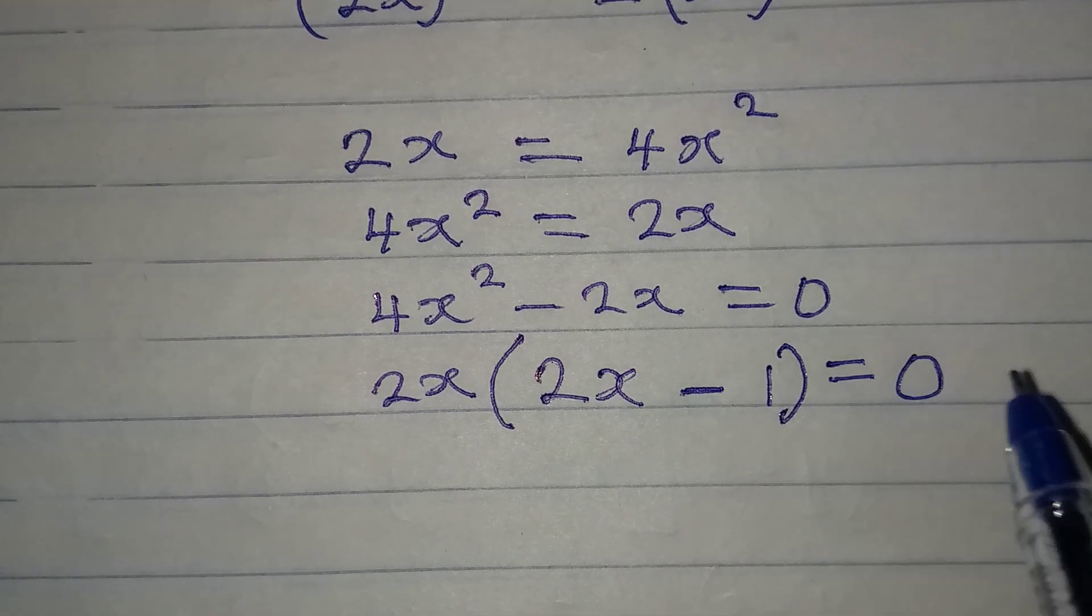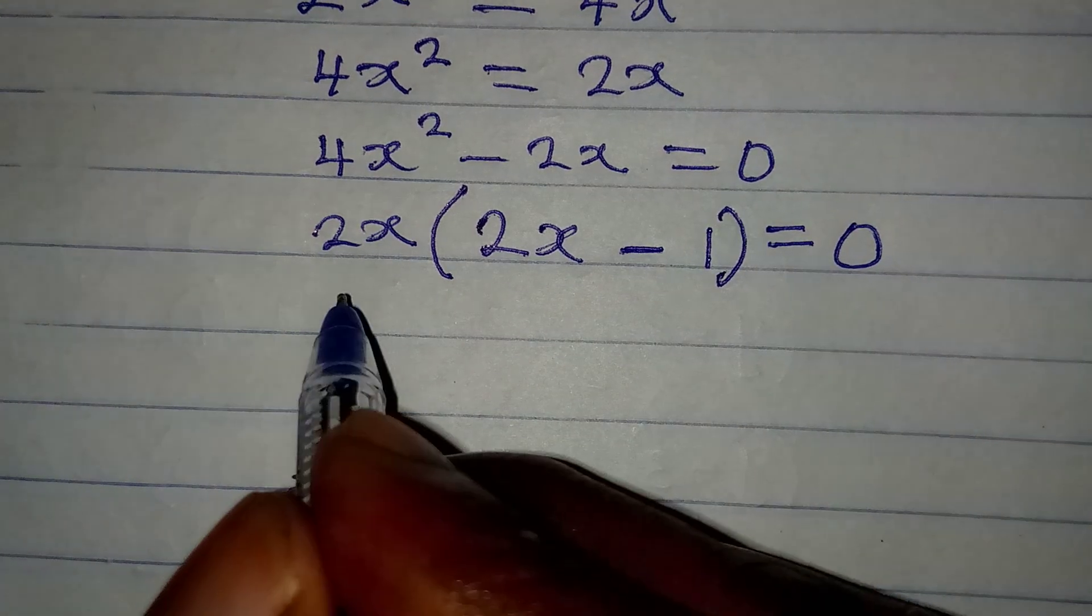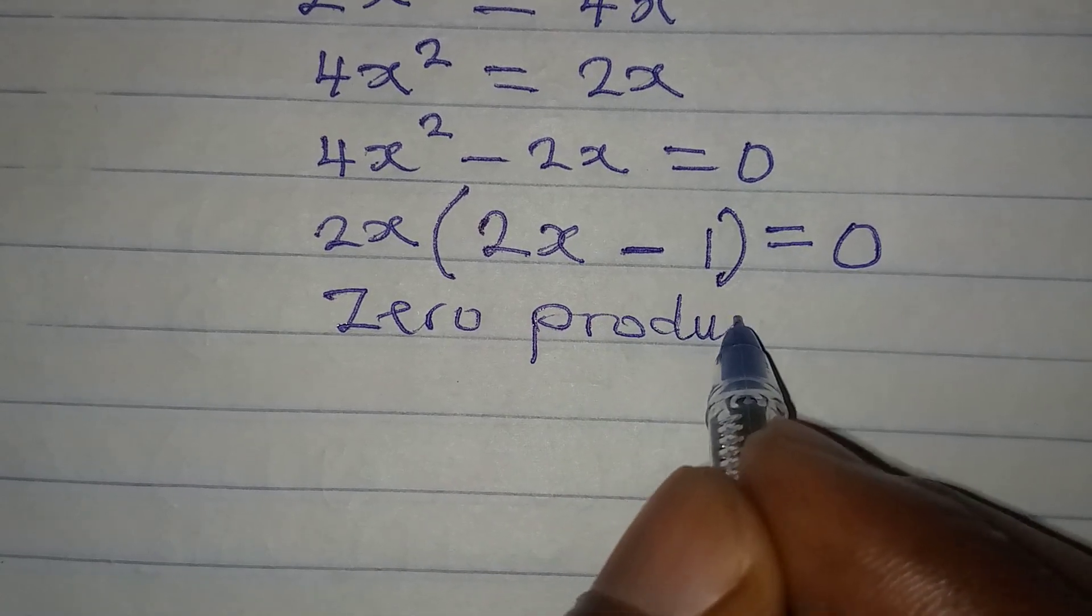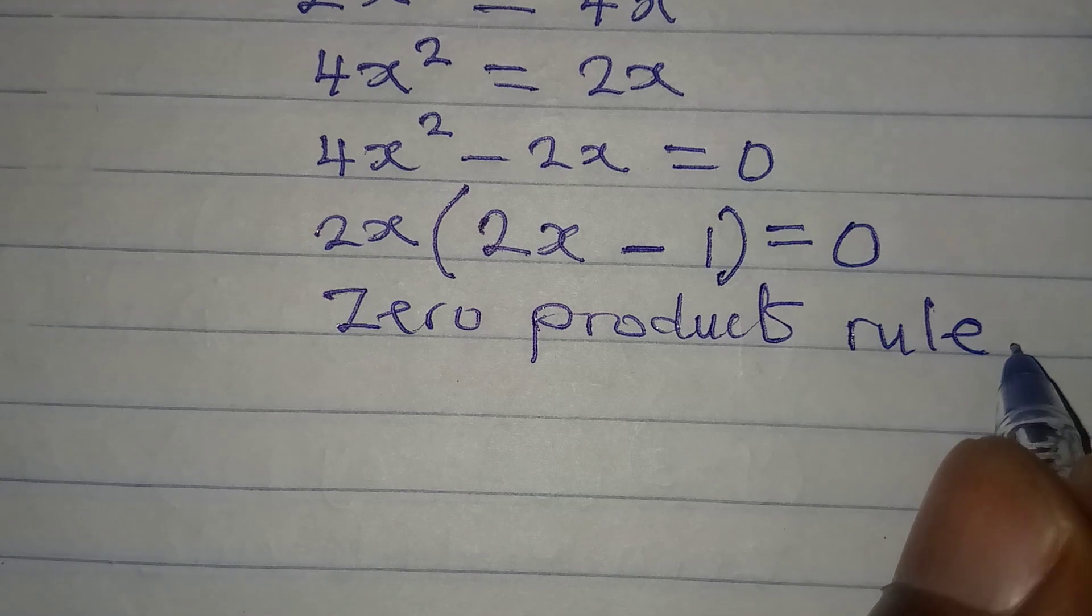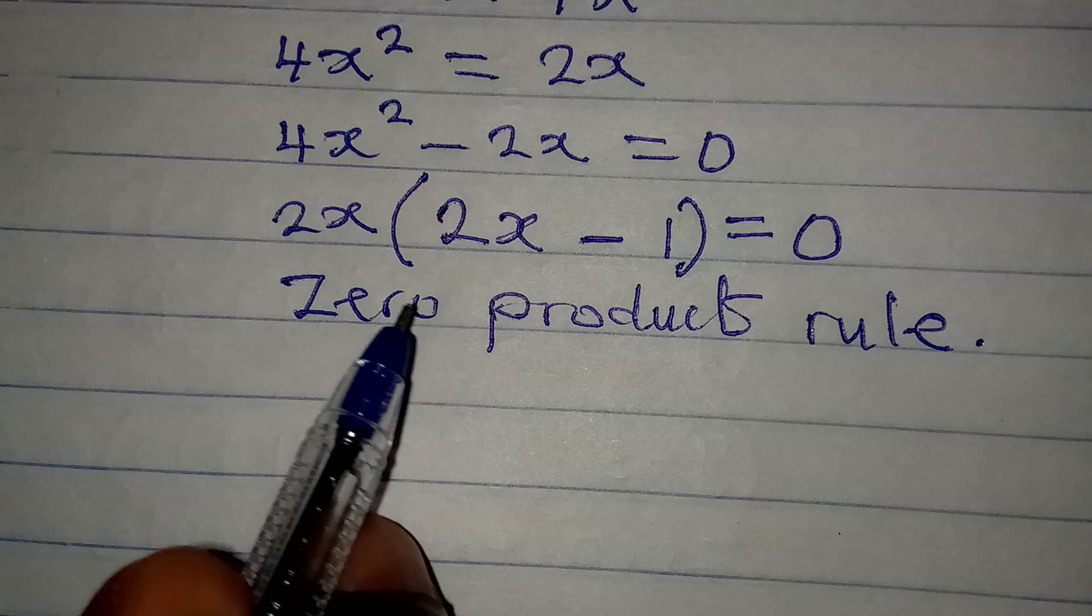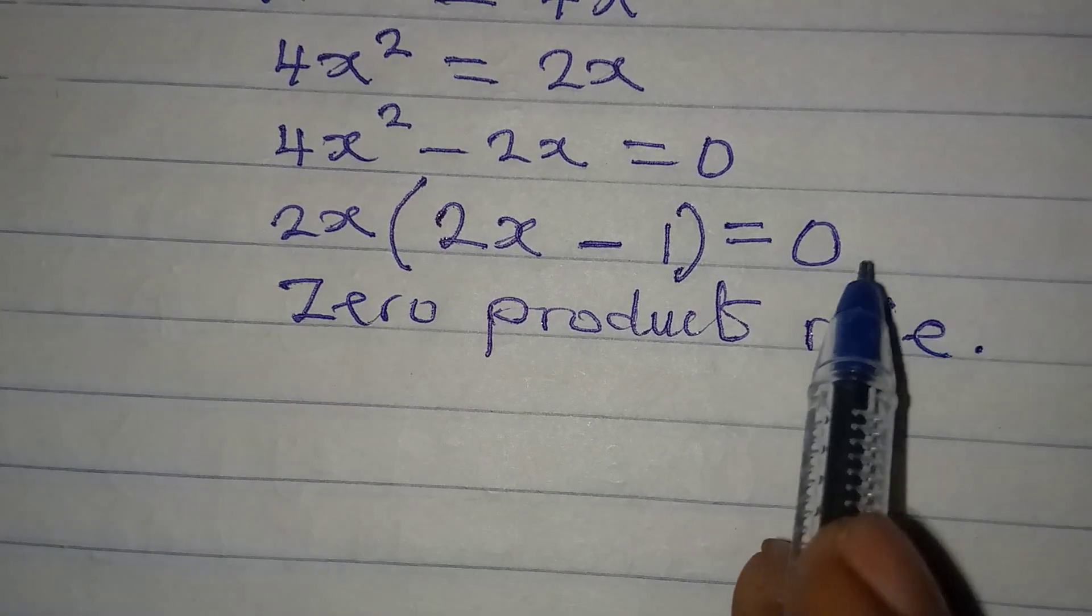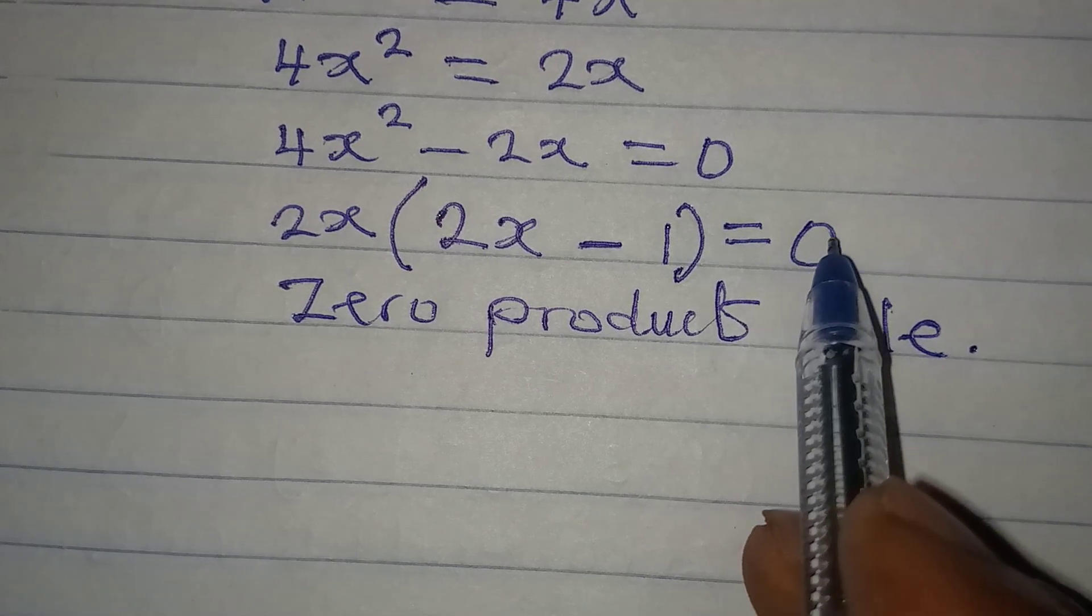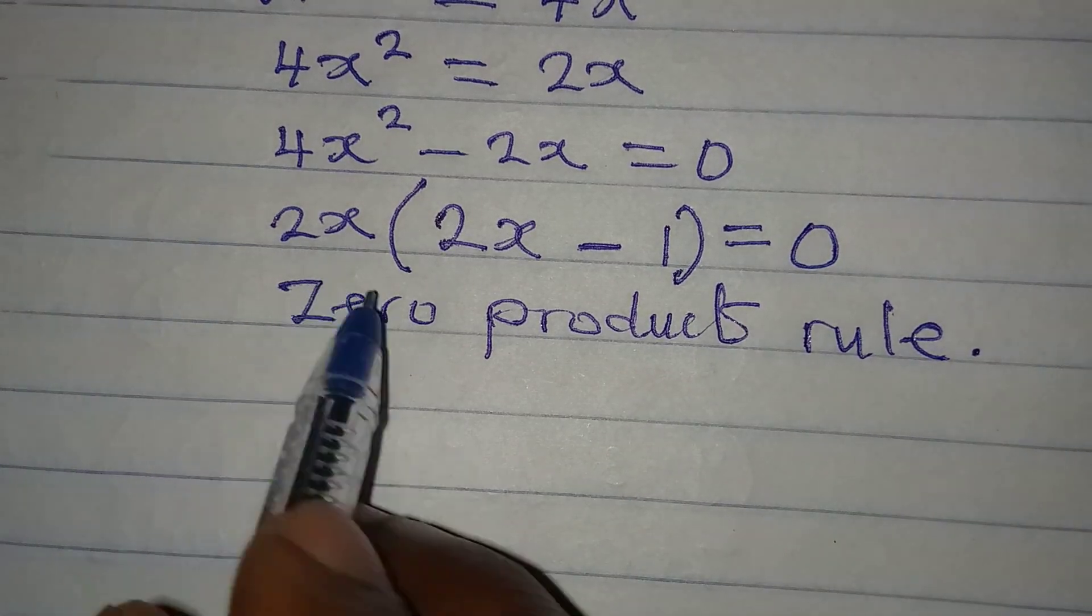And this will be equal to 0. Now, we have to apply zero product rule. You apply this rule when you are multiplying two expressions to get 0. If here is not 0, we cannot apply zero product rule.